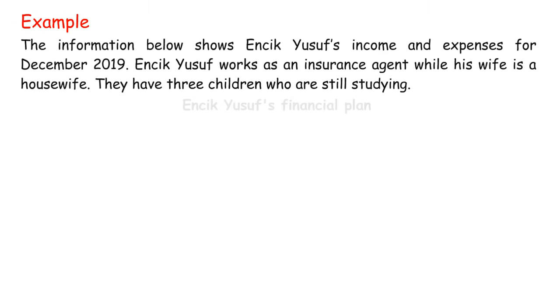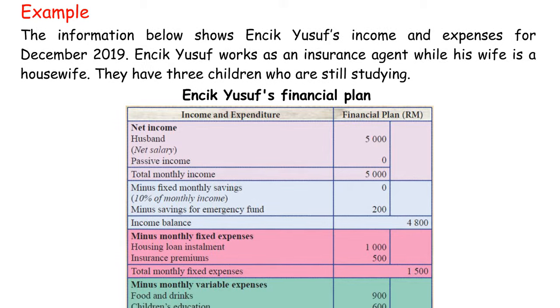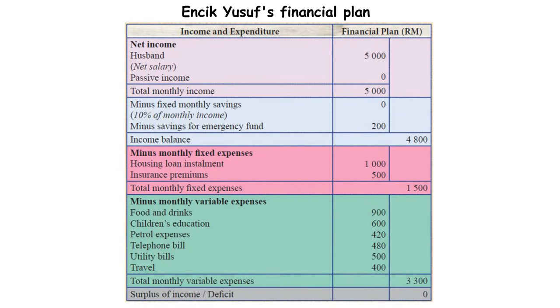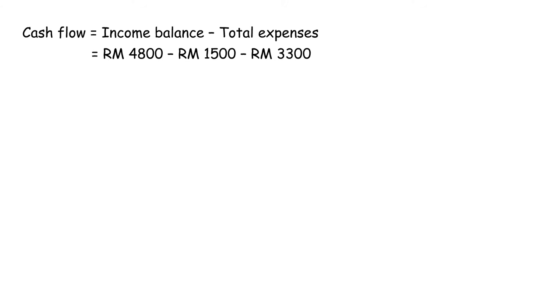An effective financial plan should set aside 10% savings of the total income prior to engaging any fixed and variable expenses. The plan should prioritize fixed expense payments such as monthly installments for cars, houses, and credit card bills. If there is a negative cash flow, adjust the financial plan by reducing variable expenses and add a source of income using your skills. Example: Enzik Youssef's income and expenses for December 2019 — cash flow equals RM4,800 minus RM1,500 minus RM3,300 equals RM0.